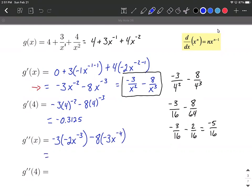We can clean this up a little bit by saying, well, negative three times negative two makes positive six x to the negative third. Negative eight times negative three makes positive 24 x to the negative fourth power. Or you can make this into fractions again by saying, well, that's six over x to the positive third power plus 24 over x to the positive fourth power.